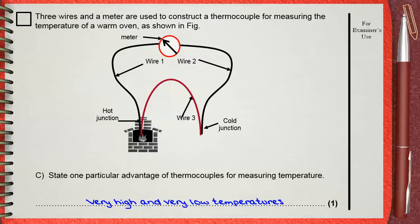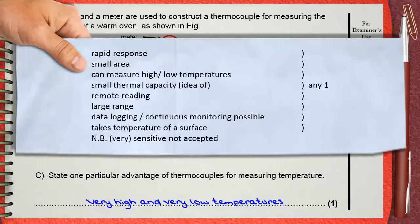You can say rapid response, you can say small area, or can measure high and low temperatures, has small thermal capacity. Thermal capacity will be discussed later in this chapter. Also thermocouple can be used in remote readings. The thermocouple has a large range. Thermocouple can be connected to a data logging for continuous monitoring of temperature changes.